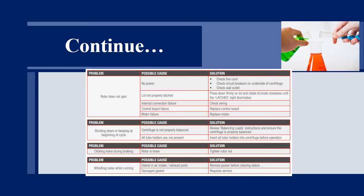Third problem that can occur in the centrifuge is the rotor does not spin. Maybe there is no power, so we have to check the line cord, check the circuit breakers and the wall outlet. Maybe rotor does not spin because lid of the centrifuge is not properly latched. Press down firmly on lid and rotate the knob clockwise until the latch light illuminates.